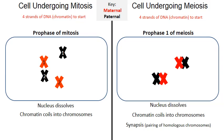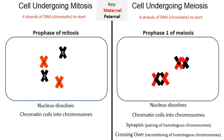Why does synapsis happen? Synapsis sets up what's called crossing over — the recombining of the homologous chromosomes. Portions of chromosome two in red will actually break off and reattach with portions of chromosome two in black, recombining portions of our homologous chromosomes with one another. The same thing happens in the other tetrad: portions of chromosome number one will break off and reattach with portions of the other chromosome number one. Synapsis and crossing over only happen in prophase one of meiosis — this does not occur in mitosis.